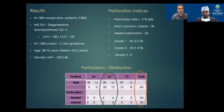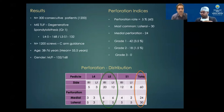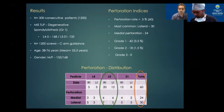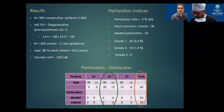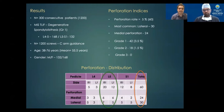In 300 consecutive patients with degenerative spondylolisthesis, L4-L5 were 168 patients and L5-S1 were 132 patients. Mean age was 55.5 years; 132 were male and 168 were female. We found 60 perforated screws, which is 5%. Most commonly screws were perforated laterally — 30 screws. Medial perforations were 24. Grade 1 showed 42 screws with perforation, which is 3.5%. Grade 2 showed 18 screws. There were zero patients with Grade 3 perforation.